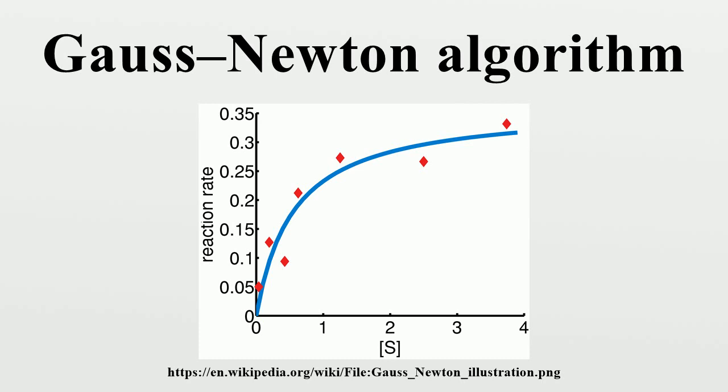A more efficient strategy is this: When divergence occurs increase the Marquardt parameter until there is a decrease in S. Then, retain the value from one iteration to the next.